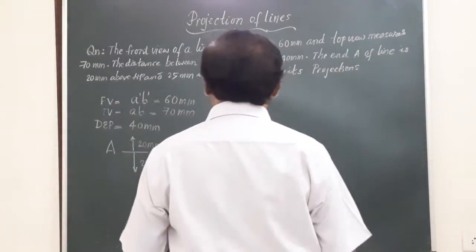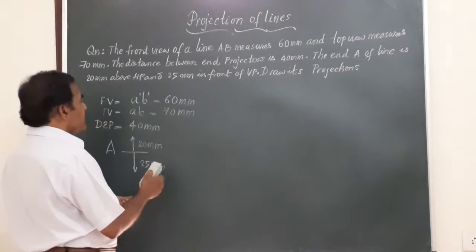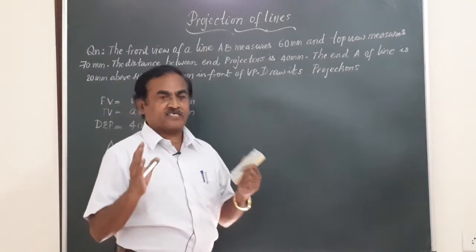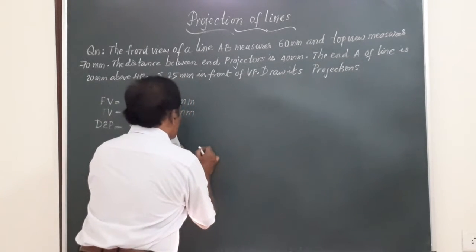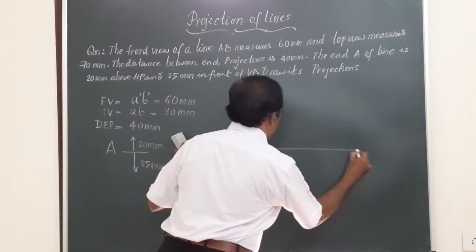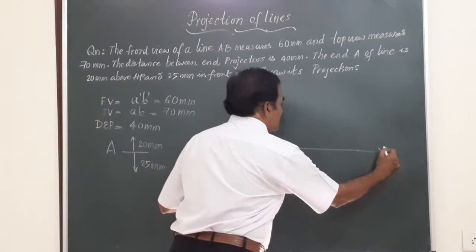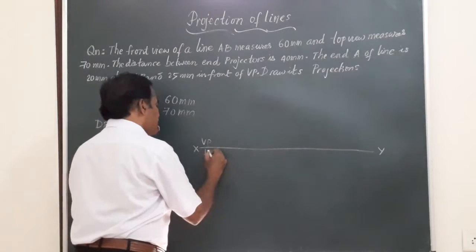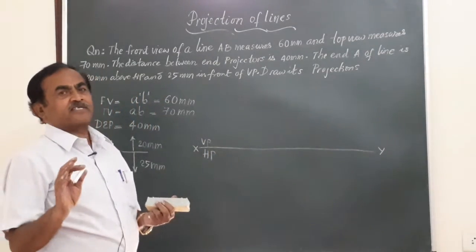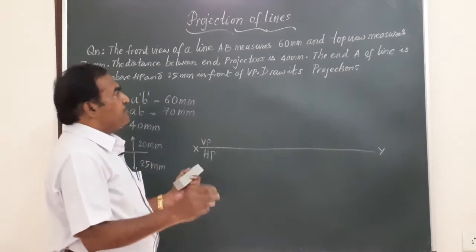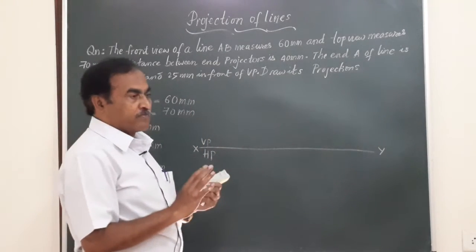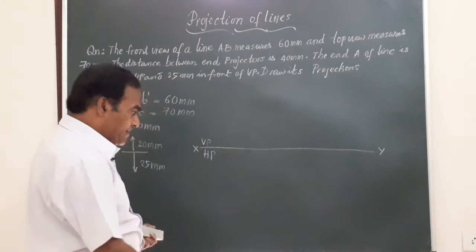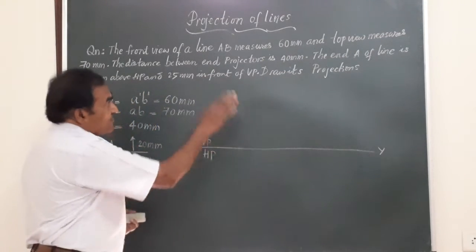Friends, please follow the procedure thoroughly and you will be able to get the concept after going through this problem. Here we are following the first angle projection. So I mark an XY line as you have done in solids, and we mark VP and HP. This VP and HP marked above and below the XY line represents first angle projection. Remember, the wall in front of you is the vertical plane, and the floor on which I am standing is the horizontal plane.